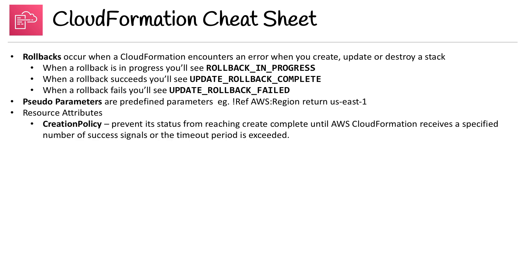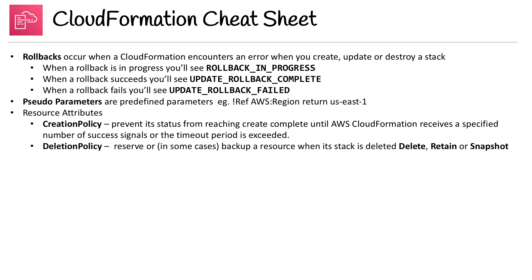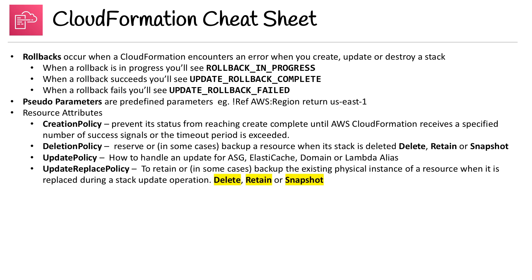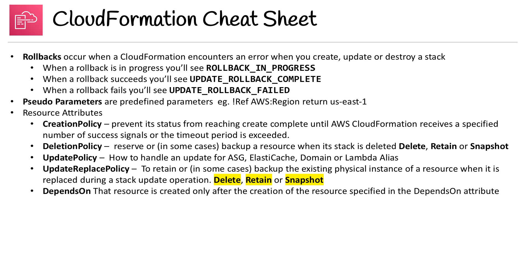Resource attributes include several important policies. Creation Policy prevents a resource's status from reaching 'create complete' until CloudFormation receives a specified number of success signals or the timeout period is exceeded. Deletion Policy reserves or in some cases backs up a resource when its stack is deleted — options include Retain or Snapshot. Update Policy defines how to handle an update for an ASG, ElastiCache, domain, or Lambda alias. Update Replace Policy retains or backs up the existing physical instance of a resource when it's replaced during a stack update. DependsOn ensures a resource is created only after the creation of the resource specified in the DependsOn attribute.